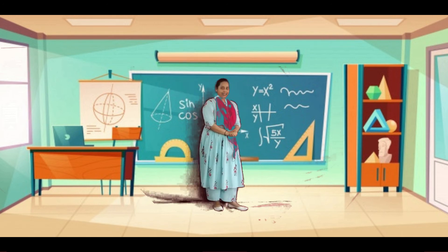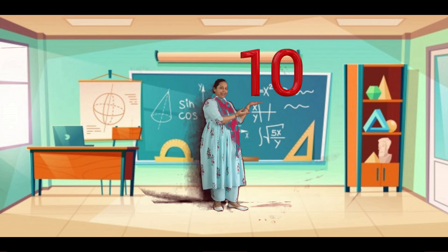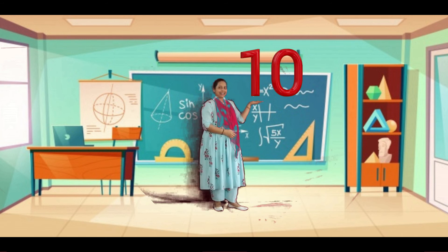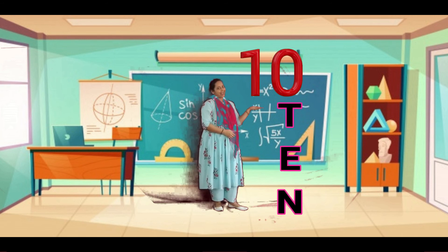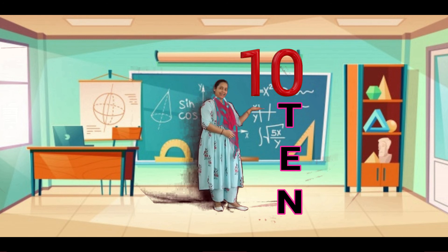So children, now see here our last number — 10. Ten is spelling children: T, E, N. Ten.